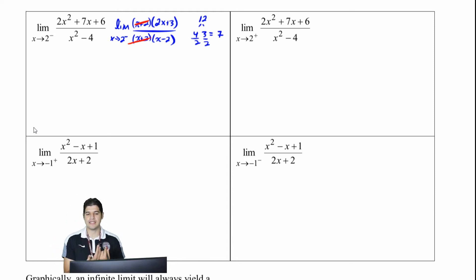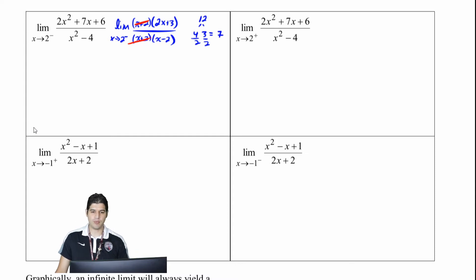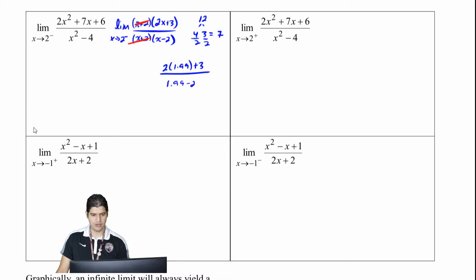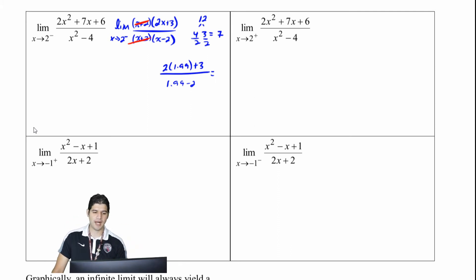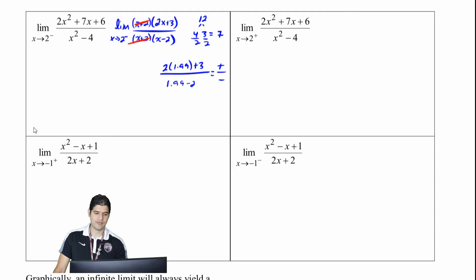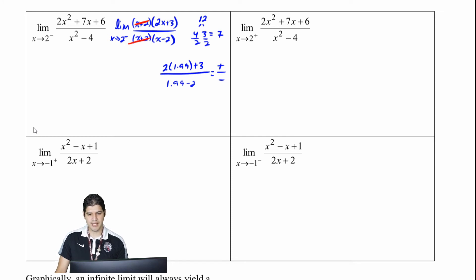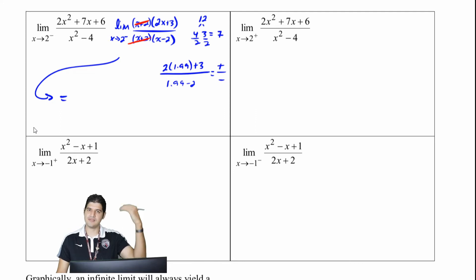So as I do some numerical analysis, I want to think about values that are left of 2, so something like 1.99. Substituting that in: 2 times 1.99 plus 3 all over 1.99 minus 2. Looking at the signs — 2 times about 2, that's going to get me positive, plus a number that's still positive. And in my denominator, 1.99 minus 2 gives me a negative value. So positive over negative gives me negative infinity.